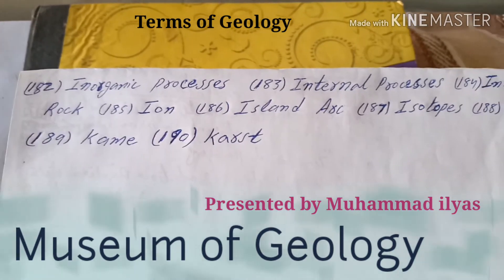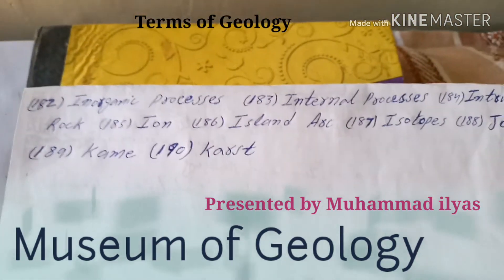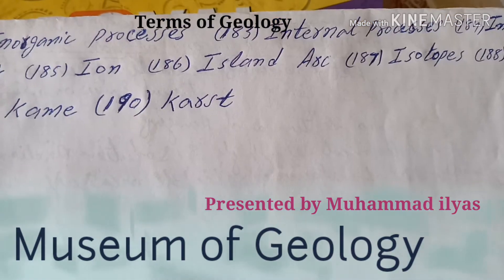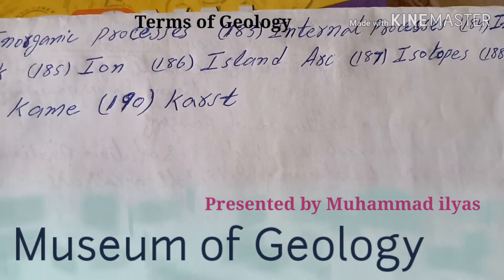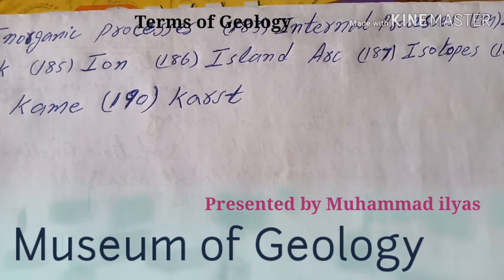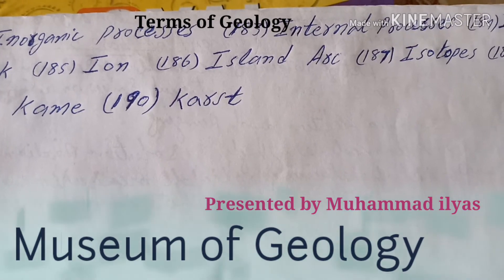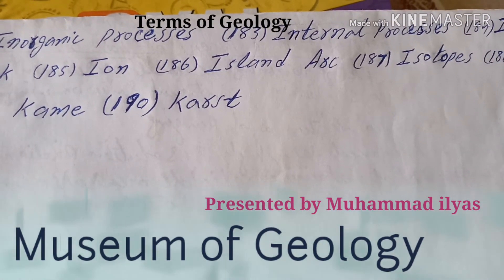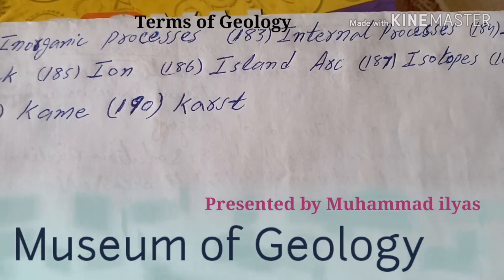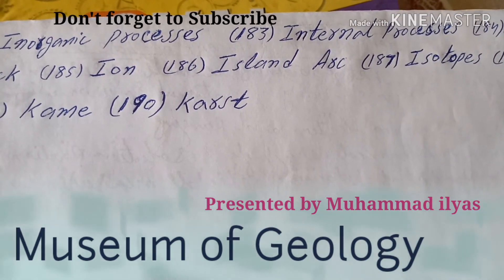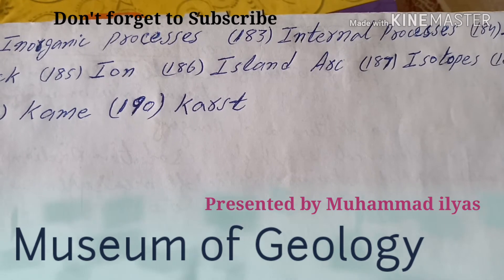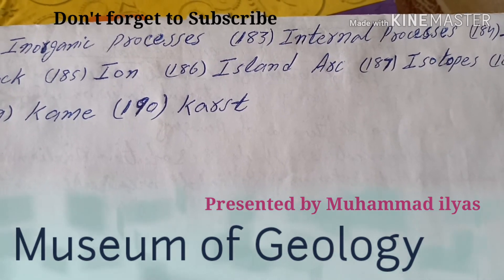On number 190 there is karst. Karst topography can be defined as a topography consisting of numerous depressions called sinkholes. It is also called karst topography.